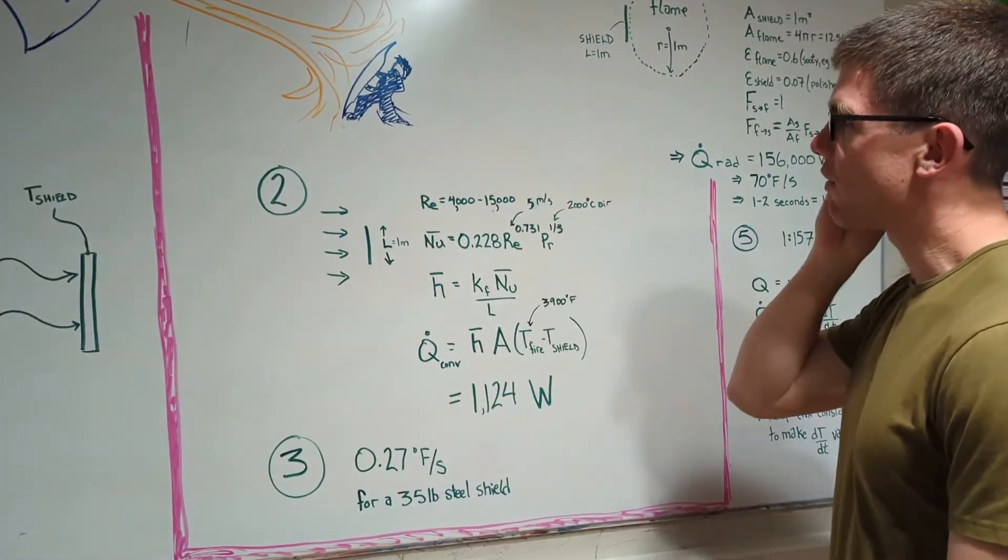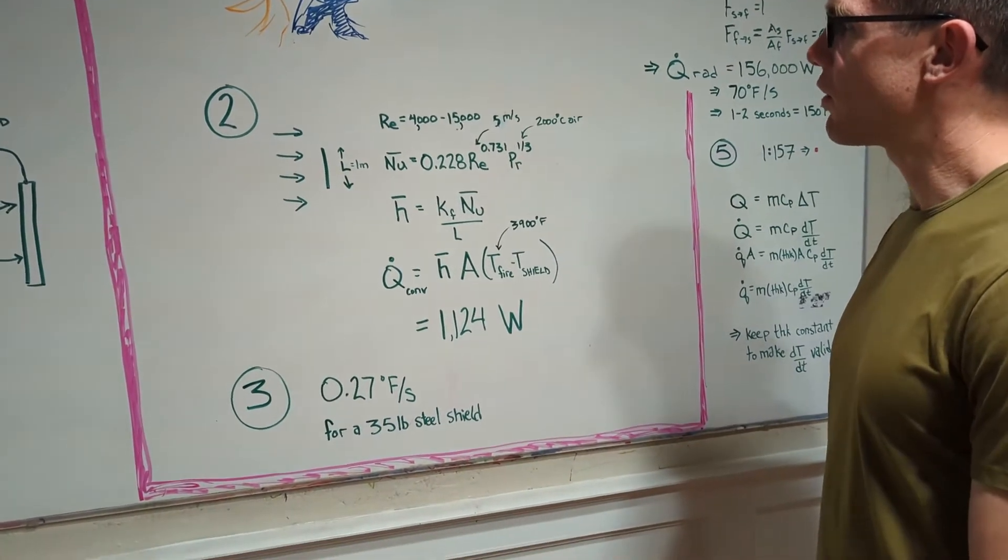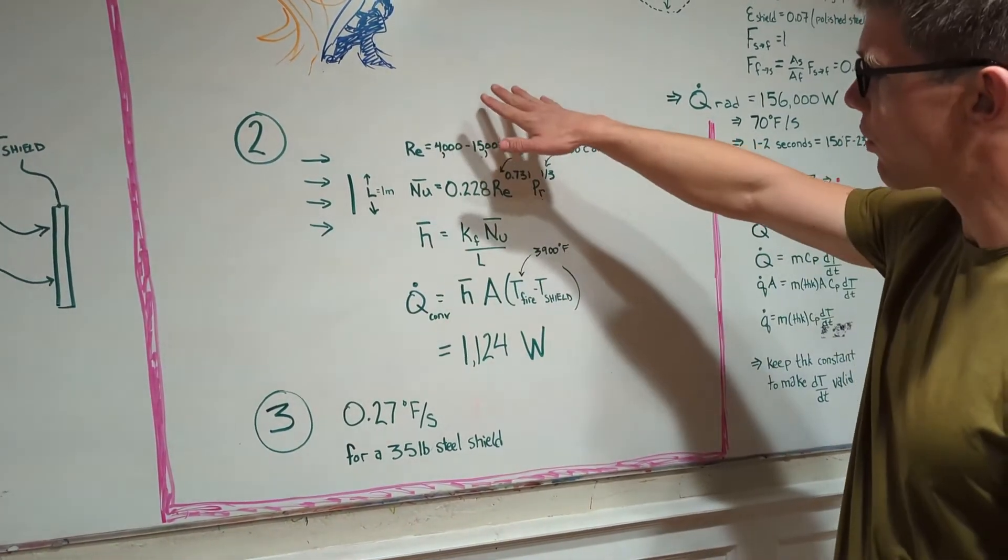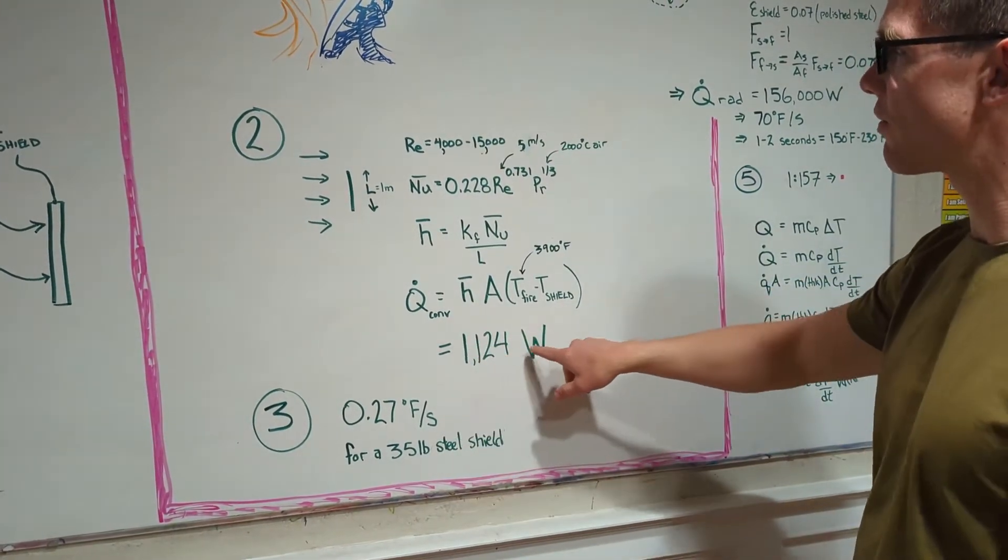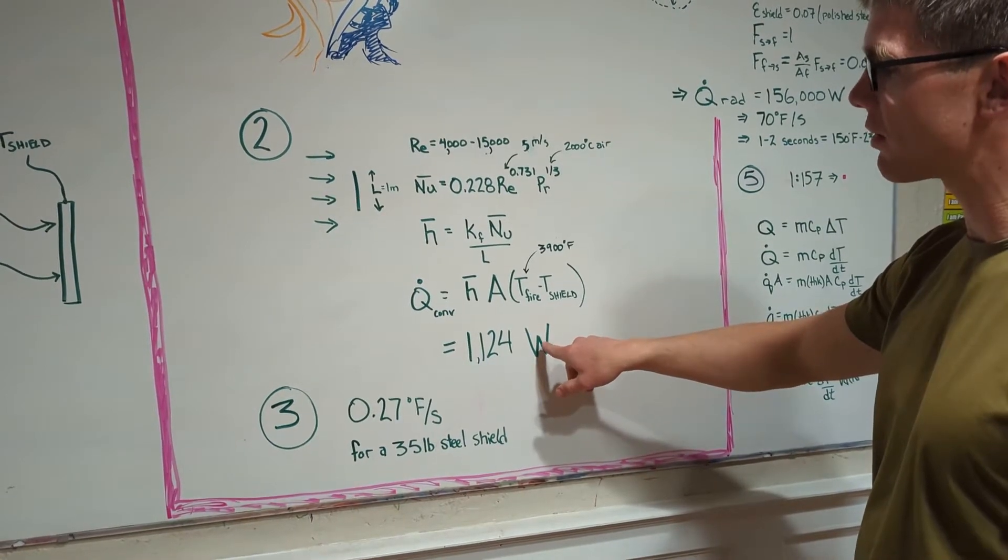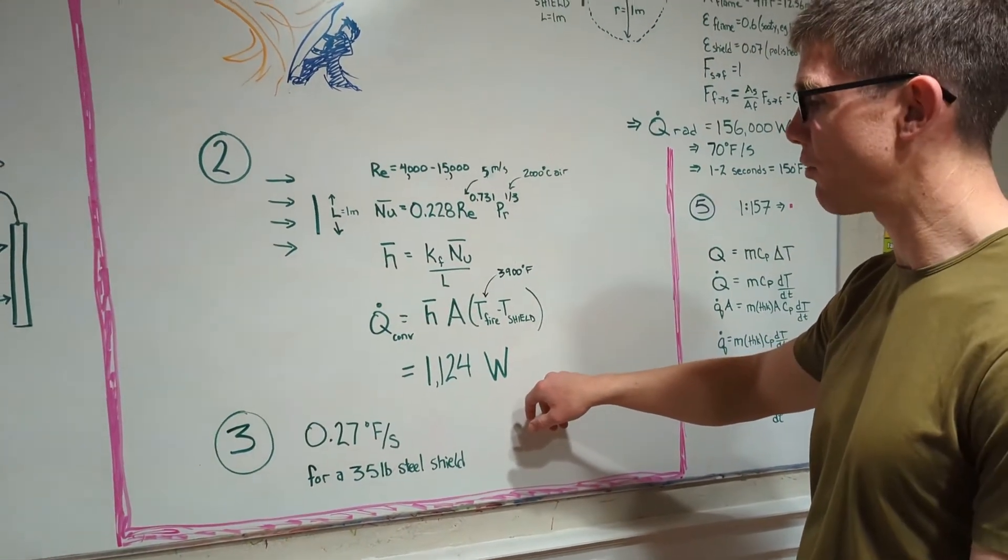In our second post we looked at convection heat transfer which is heat transfer from a fluid to a solid or vice versa. We went through the math and decided that our convection heat transfer going into that shield is only about a thousand watts, which is about as much as your microwave puts into your food.